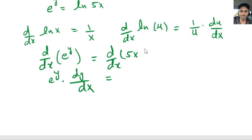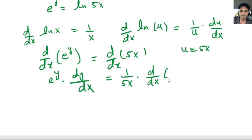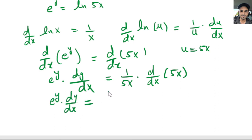We can plug in u equals 5x and write the right side as 1 over 5x times d over dx of 5x. I substituted 5x for u in the expression: derivative of ln of u equals 1 over u times du over dx. So we get e to the y times dy over dx equals 1 over 5x times the derivative of 5x, which is 5.